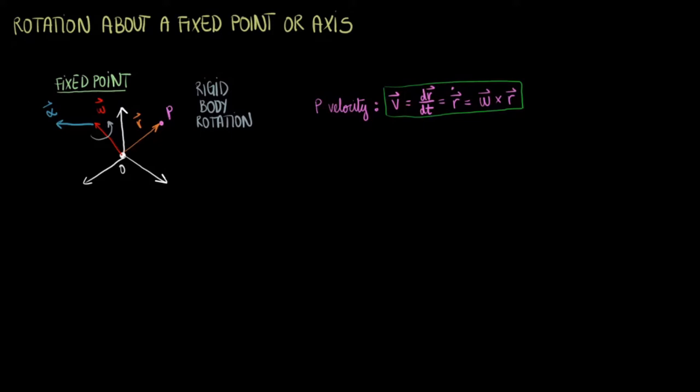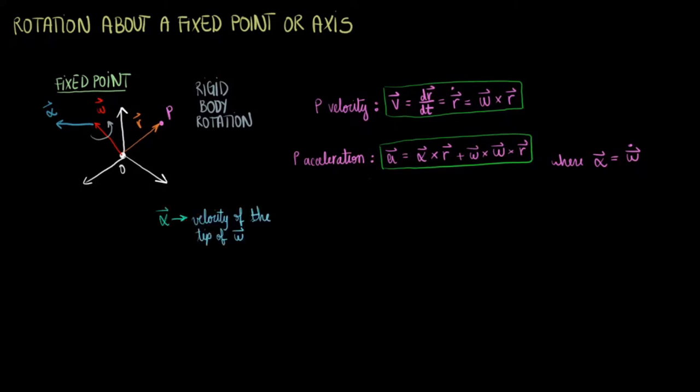P will also have an acceleration, which equals the angular acceleration cross the position vector plus the angular velocity cross the angular velocity cross the position. Note that the angular acceleration will be the angular velocity dot. This angular acceleration alpha can be thought of as the velocity of the tip of the angular velocity vector omega.